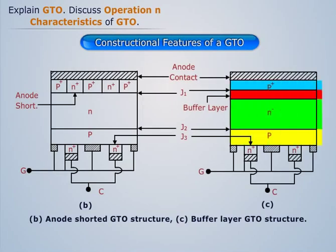GTO is a four-layer, three-junction PNPN device. To obtain high emitter efficiency at the cathode end, the N-plus cathode layer is highly doped. The P-type gate region has conflicting doping requirements. The junction between the N-base and P-plus anode, J1, is called the anode junction.